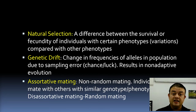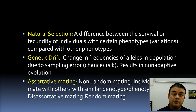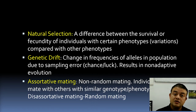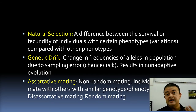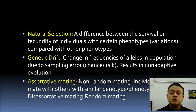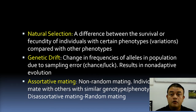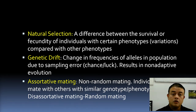Assortative mating can increase the frequency of deleterious recessives, leading to decreased fitness — this is called inbreeding depression. If closely related individuals mate, it leads to expression of recessive alleles. These recessives are usually deleterious. The extreme example of assortative mating is marrying within your own family — close-relative marriage — which is biologically very problematic.